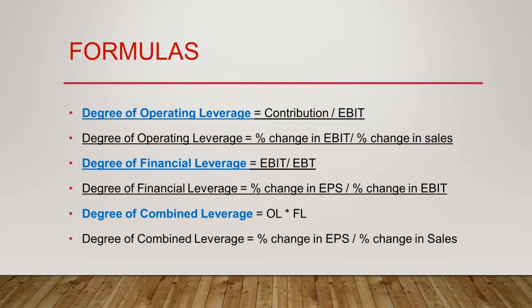For the Degree of Financial Leverage (DFL), we saw the formula: EBIT divided by EBT. This is because of the presence of fixed financial cost, which is interest expense. Whatever changes are happening in our net profit or Earnings Per Share divided by the change in EBIT — so whatever change in EPS is happening because of changes in Earnings Before Interest and Tax — that gives rise to the Degree of Financial Leverage.